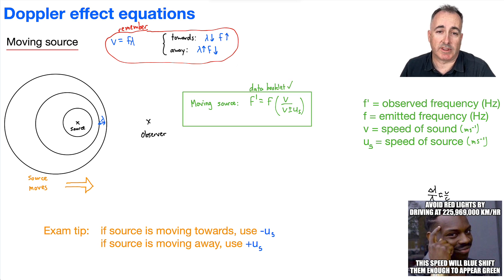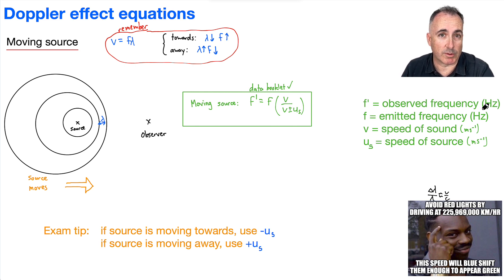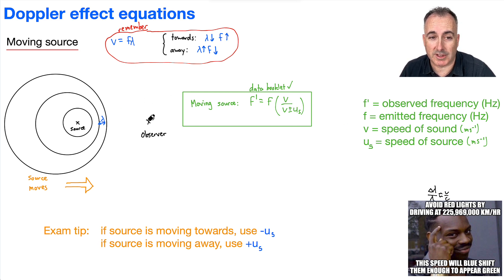What does everything mean? F-prime is what the observer actually observes — that's what they measure. F is the emitted frequency. Both of these are in hertz. V is just the speed of sound, in meters per second. And U-S is the speed of the source. There's a plus or minus because it depends on whether the source is coming towards the observer or going away from it.